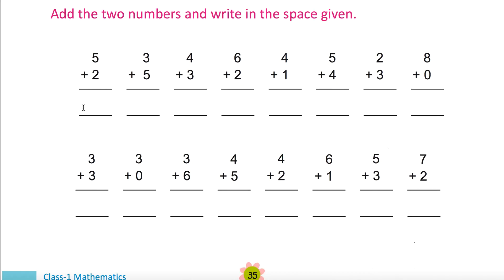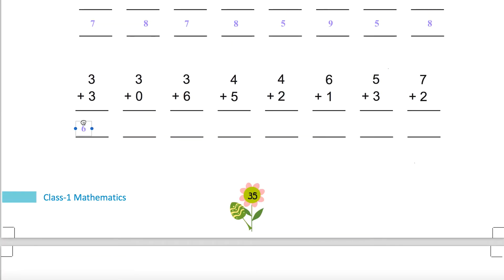Add the numbers and write in the space given. This one is three plus five equals eight: five, six, seven, eight. Four plus three equals seven: five, six, seven. Six plus two: six, seven, eight. Four plus one equals five. Five plus four equals nine. Two plus three equals five. Eight plus zero equals eight. Three plus three equals six. Three plus zero equals three. Three plus six equals nine. Again, four plus five also equals nine. Four plus two equals six. Six plus one equals seven. Five plus three equals eight. Seven plus two equals nine.